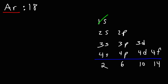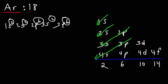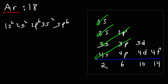We're going to start with 1s2, and then move on to 2s2, then 2p6, then 3s2, and then 3p6. If you add the exponents — 2 plus 2 plus 6 plus 2 plus 6 — you get 18. So that is the electron configuration for argon.